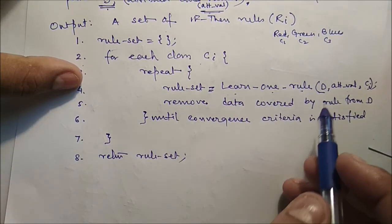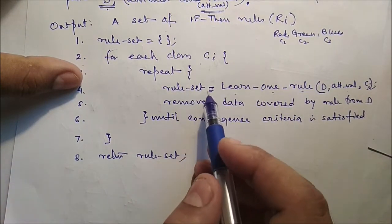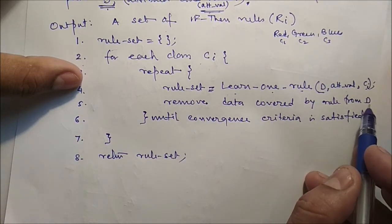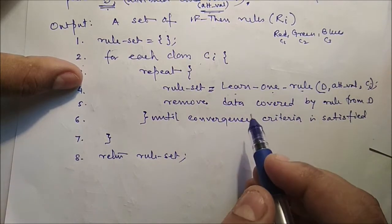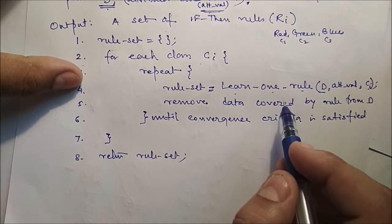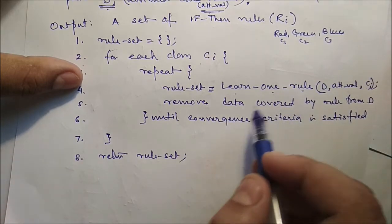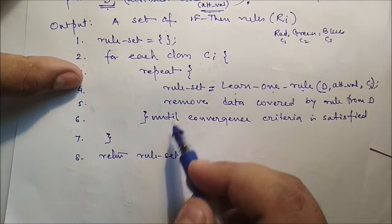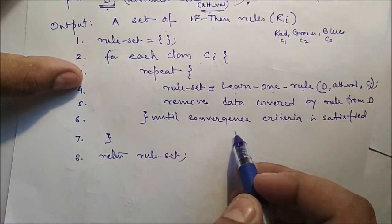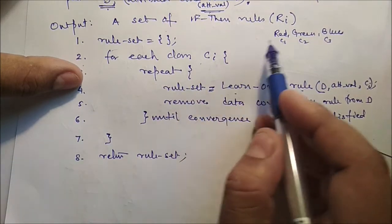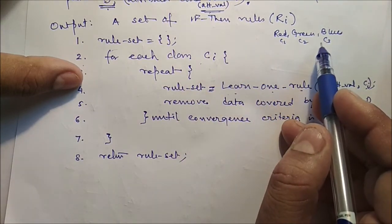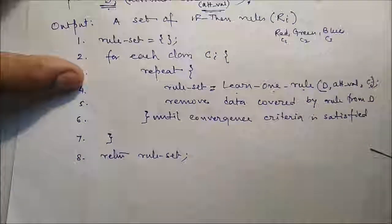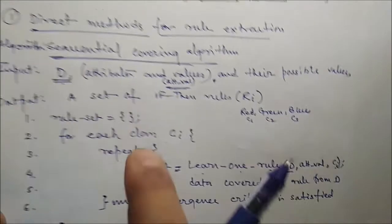The 'learn one rule' function takes as input D, attribute values, and the class label, and returns one single rule which is added to the rule set. Next, remove the data covered by the rule from D. We iterate this process continuously until the convergence criteria is satisfied, for each of the classes. This algorithm returns the complete rule set.